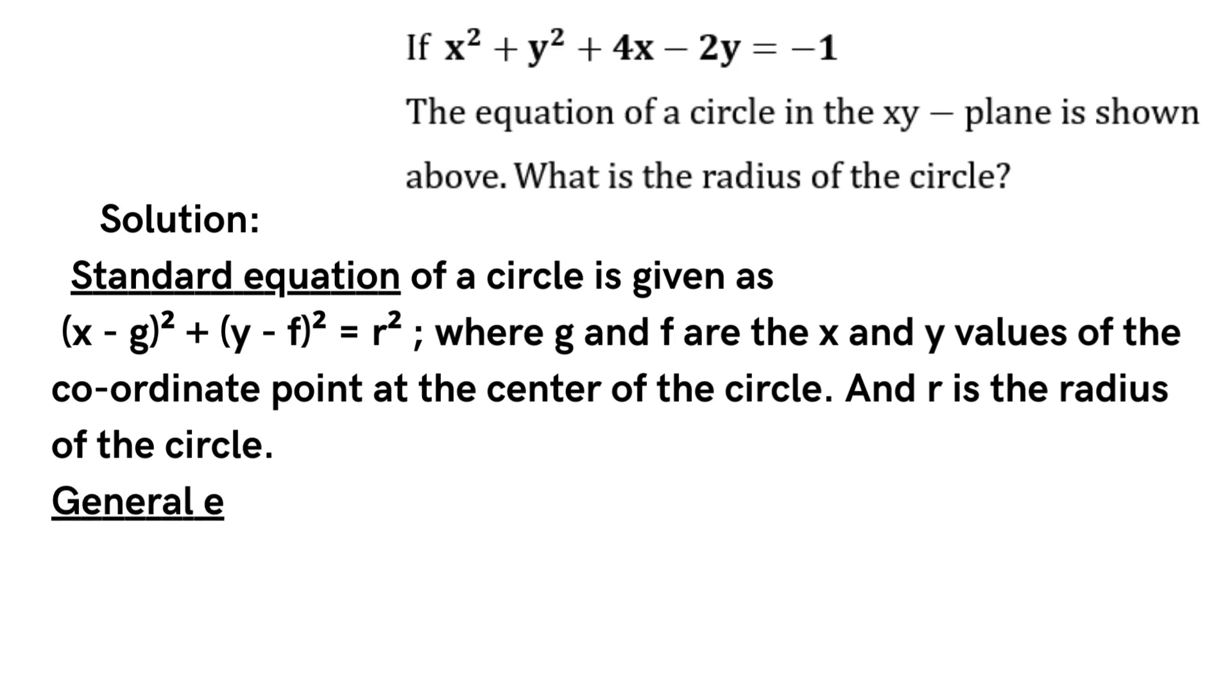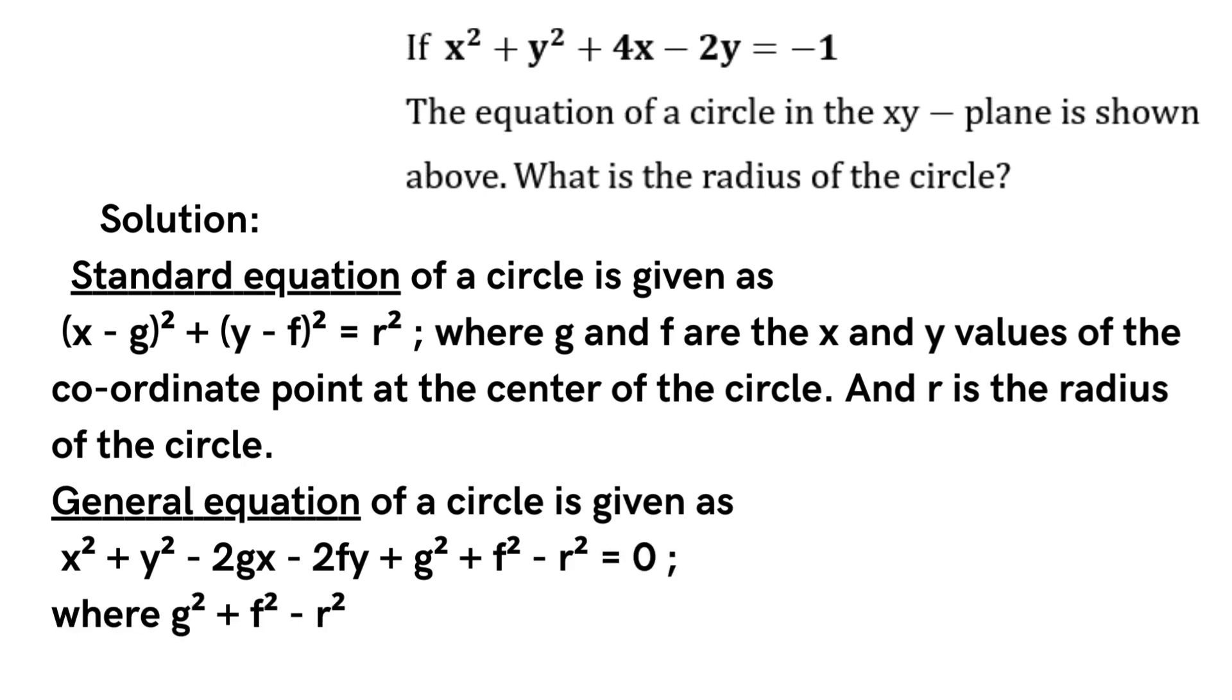Expand the standard form to get the general form. g square plus f square minus r square equals c, the constant term.